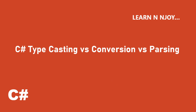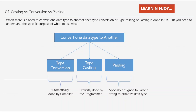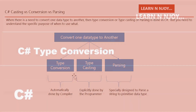Without any further delay, let's get started — upcasting versus conversion versus parsing. When there is a need to convert one data type to another, type conversion, type casting, or parsing is done in C#. You need to understand the specific purpose of when to use what. We can convert one data type to another by three ways: type conversion, type casting, and parsing. Type conversion is done automatically by the compiler, whereas type casting is explicitly done by the programmer, and parsing is where we convert a string to a primitive data type like int, short, char, float, double, boolean, etc.